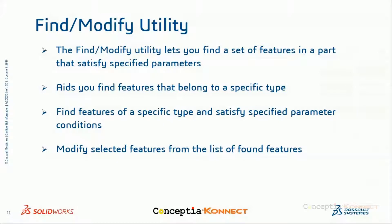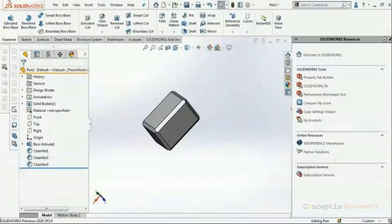The next tool is Find and Modify. It is a very powerful tool that allows you to find a category of features and modify their parameters based on your search criteria. This tool lets you find a set of features in a part that satisfy a specified parameter condition and allows you to edit them in batch mode. For example, you can find all simple holes less than 10 mm in diameter in your design and then make changes accordingly. It saves time especially when designs are very large.